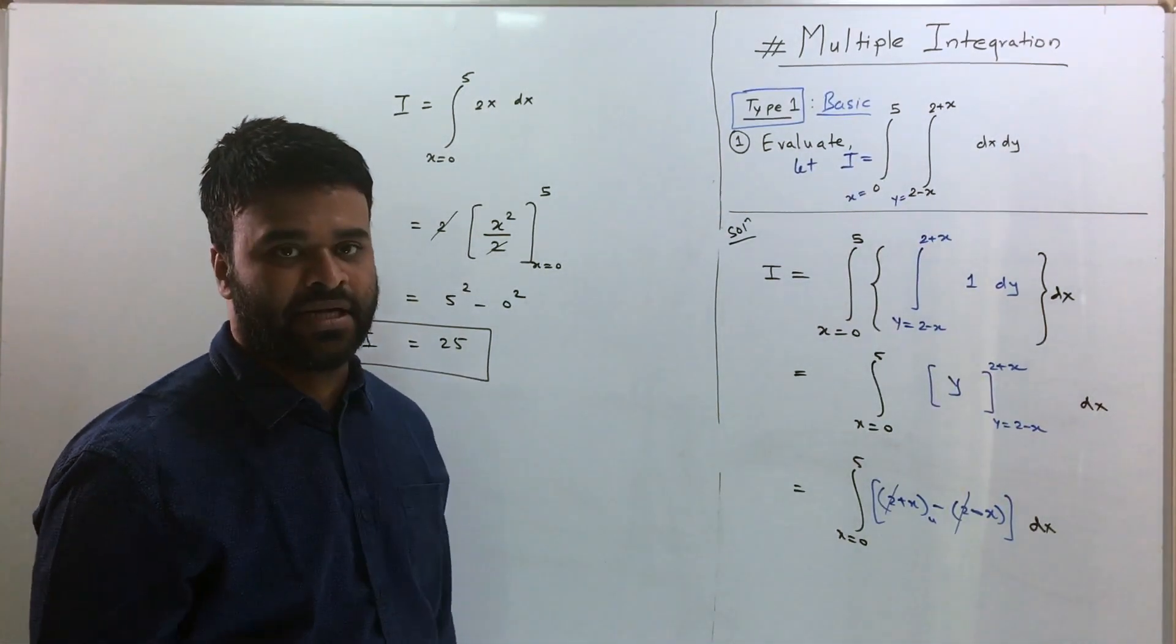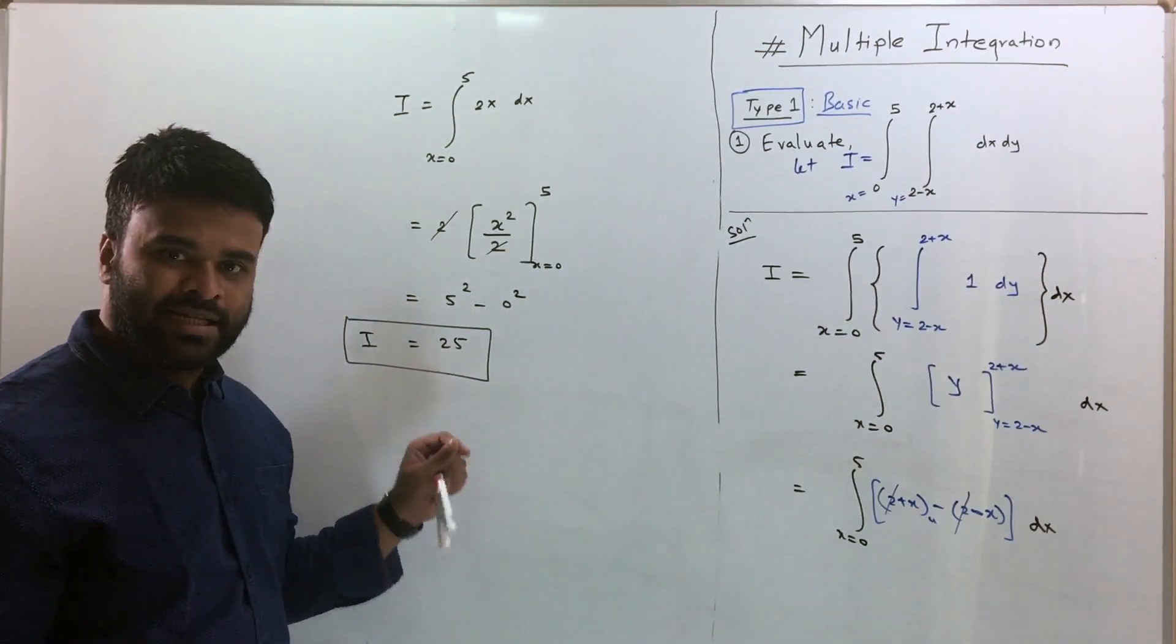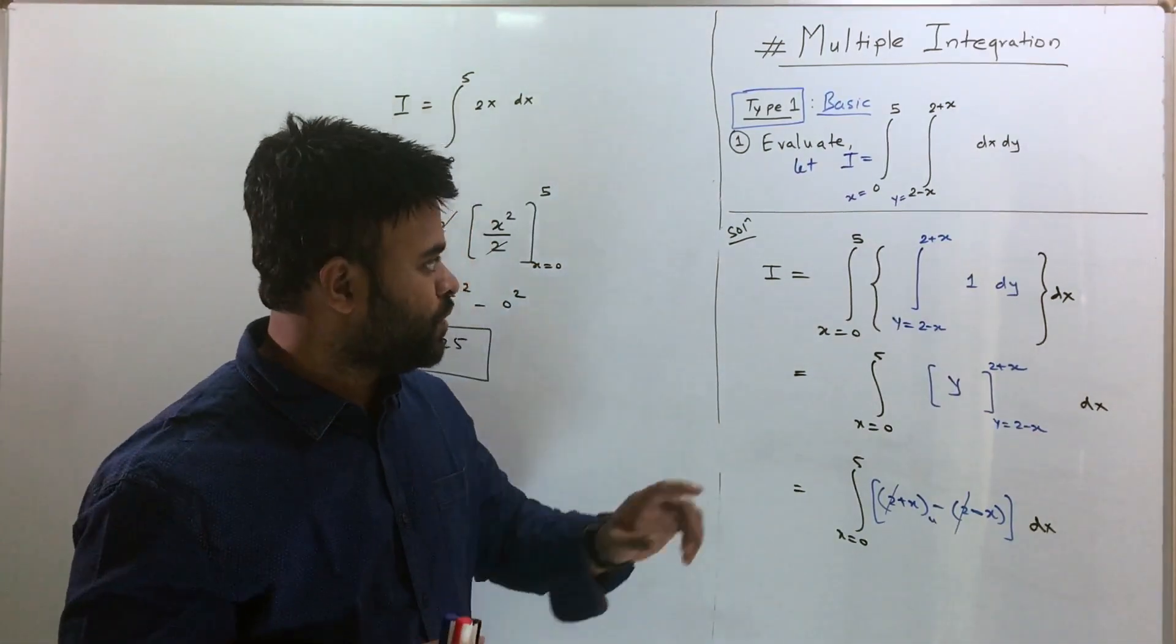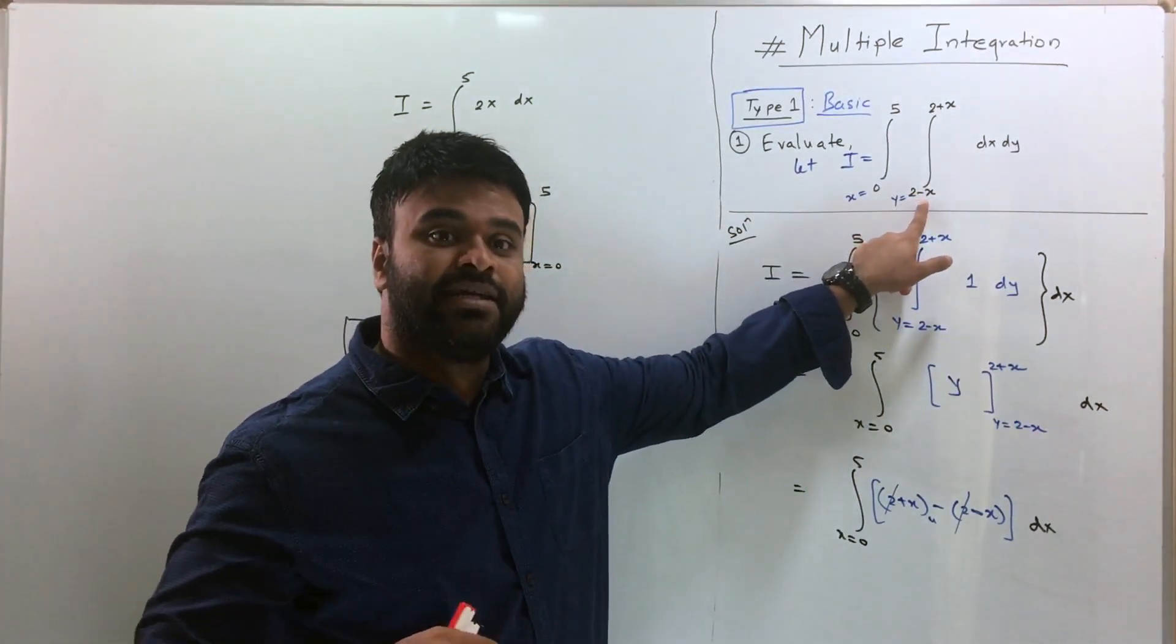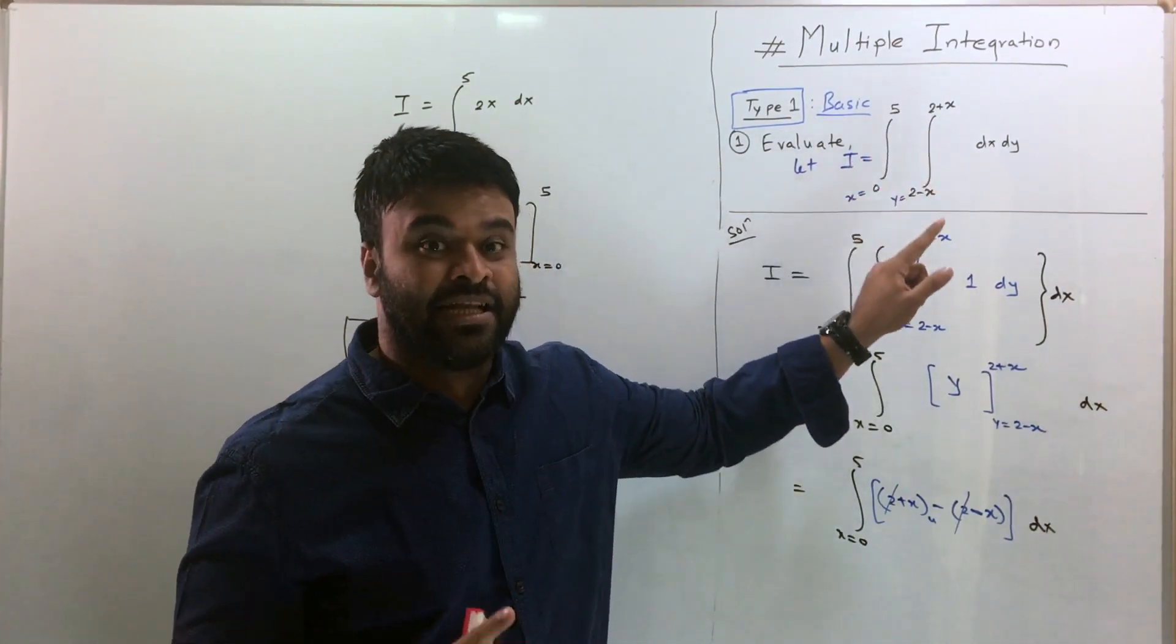And that is the answer. Very simple, right? This is the first question of multiple integration and the answer that we got here is 25. Now let's quickly recap the points. The first very important point that you should notice: when the limits are written in terms of X like 2 minus X and 2 plus X, they are the limits of Y.